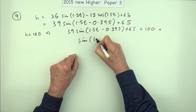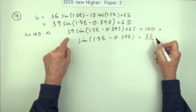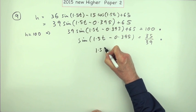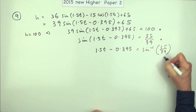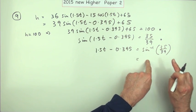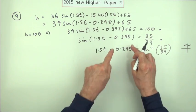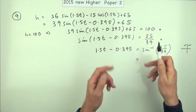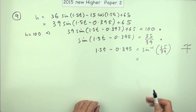Starting it off: sin(1.5t − 0.395) = (100 − 65)/39 = 35/39. The next mark comes here for starting to solve it. Getting rid of the sine: 1.5t − 0.395 = inverse sin(35/39), which is a positive amount, so I know there are two answers — first and second quadrant. There's a problem about accuracy since that 0.395 had to be rounded off as a final answer, but there's leeway in the marking for various roundings, as long as it isn't too severe.